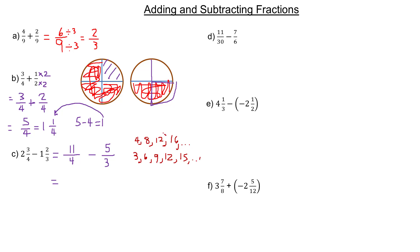Twelve is the first multiple that's common — the same. So that's the least common denominator, or least common multiple.